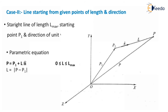Next case: a line starting from a given point of a length and a direction. A straight line of length l_max starting from point p1 in the direction of unit vector n-cap. Then p = p1 + l·n-cap. Previously u varied from 0 to 1; here, length l is the independent variable ranging from 0 to l_max. So the parametric equation is p = p1 + l·n-cap, where l = |p − p1|.